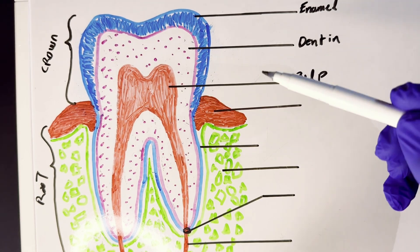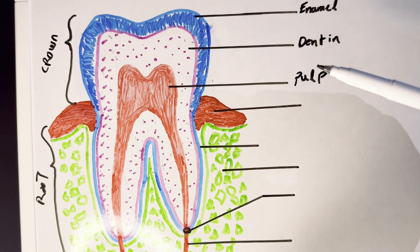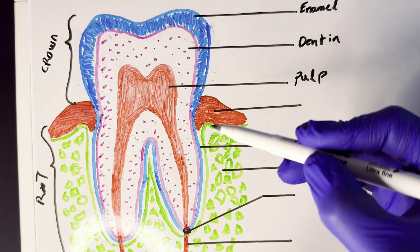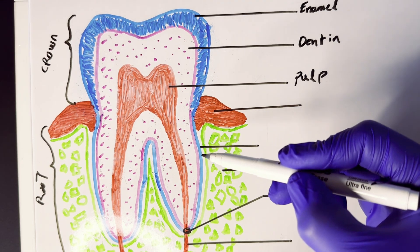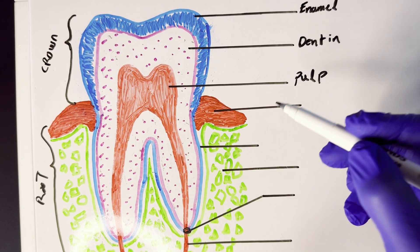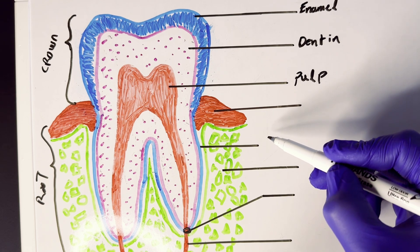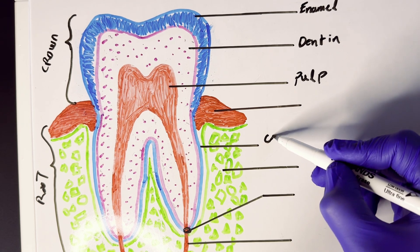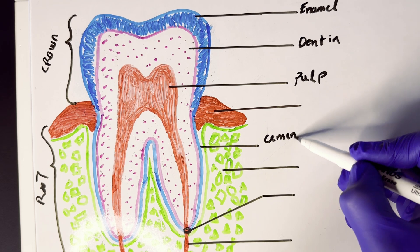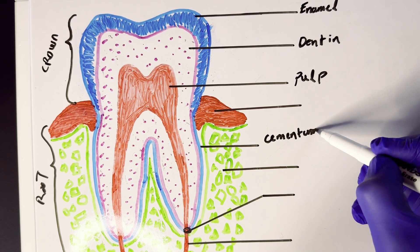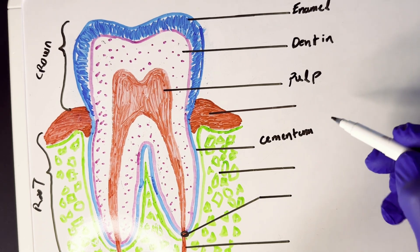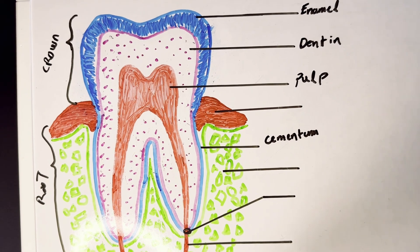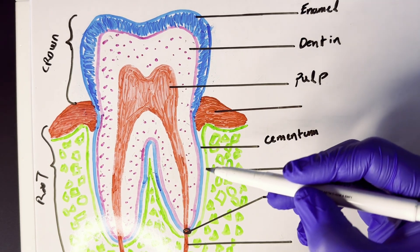So now let's jump on to this blue line I've drawn here along the side of the root. Now this blue line indicates or represents the cementum. Cementum is another mineralized structure or crystallized structure that kind of acts as a protective layer for the root of the teeth.